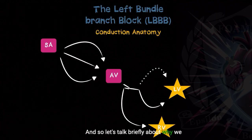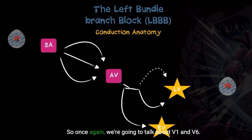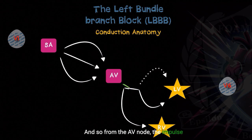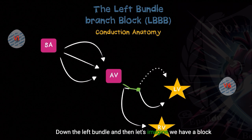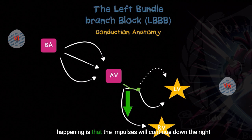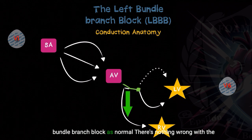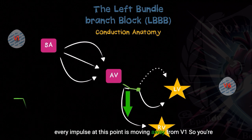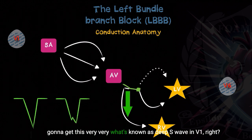Let's talk briefly about why we see what we see on the 12-lead EKG. We're going to focus on V1 and V6 — our main leads for identifying bundle branch blocks. From the AV node, the impulse travels down the bundle of His, down the left bundle, and if we have a left bundle branch block, the impulses will continue down the right bundle branch normally. Every impulse at this point is moving away from V1, so you're going to get a very deep S-wave in V1.